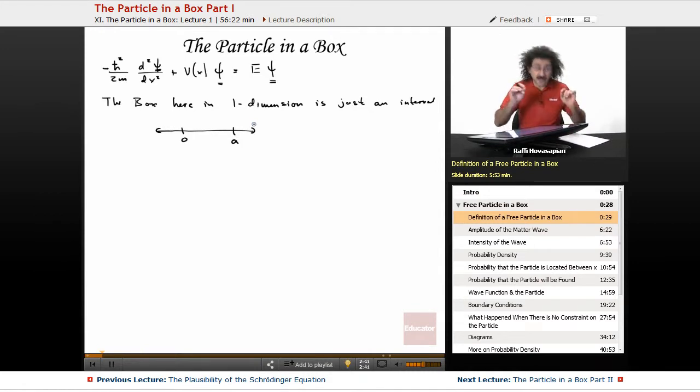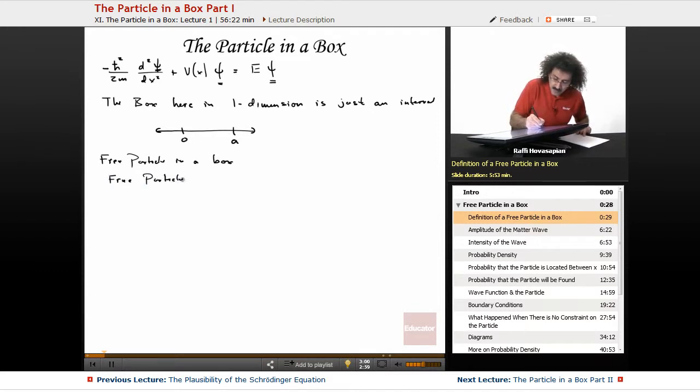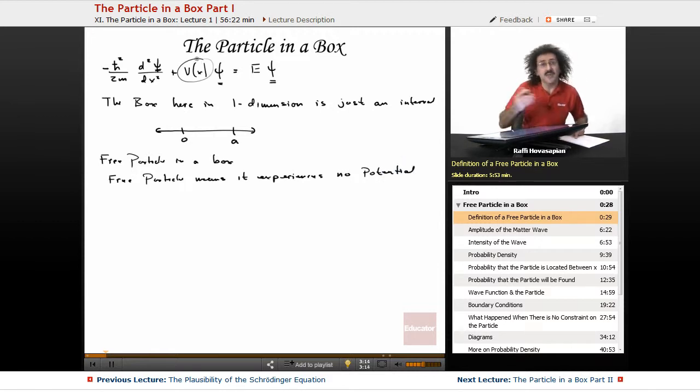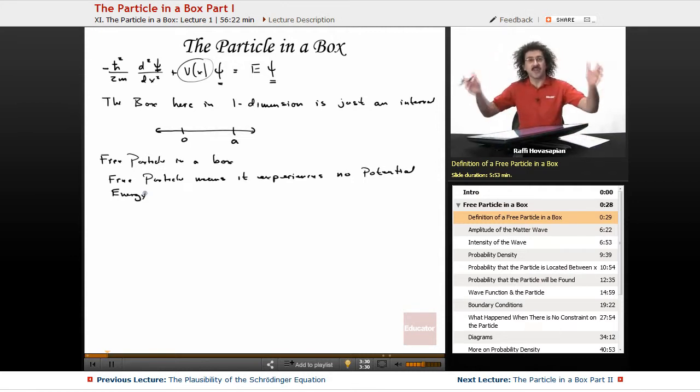Now we're going to study the free particle constrained to lie between zero and A. The free particle in a box. Now the word free particle here - free particle means it experiences no potential energy. In other words, V in the Schrödinger equation is going to be zero in this particular case. So it simplifies our equation. Imagine just taking this particle, dropping it on this interval and saying, where are you going to be? How fast are you going to be moving? Where is it going? Things like that. What's it going to do? Well, it can only do one of two things. It basically can go this way or it can go this way.